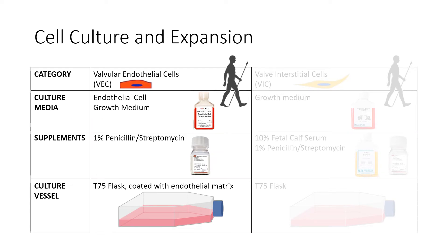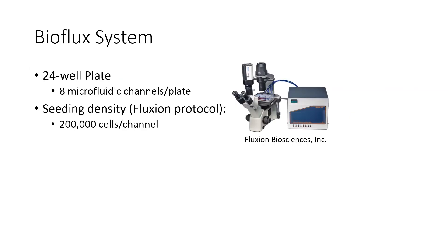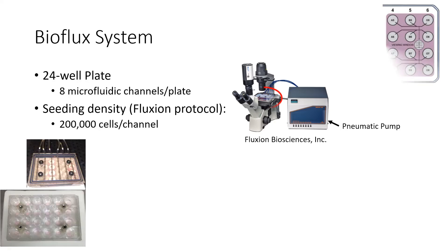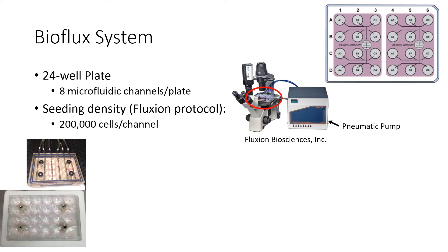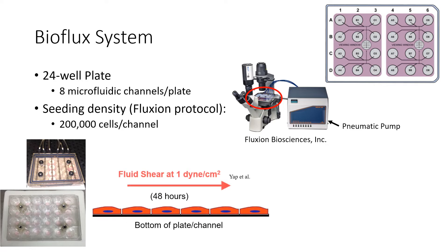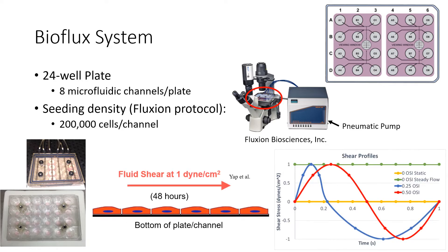First, we cultured VECs. Commercially available human VECs were purchased and expanded with the recommended growth medium in coated T75 flasks. The VECs were then conditioned in a BioFlux shear assay system using a 24-well plate that consisted of eight microfluidic channels. A shear magnitude of one dyne per centimeter squared was applied to the endothelial cells for all flow groups: static, steady, 0.25 OSI, and 0.5 OSI. Each group was subject to 48 hours of flow conditioning.